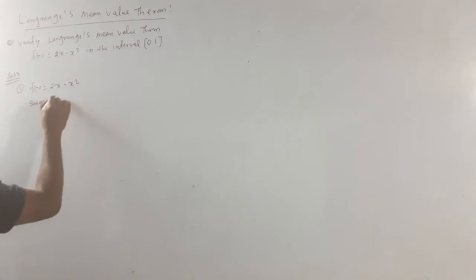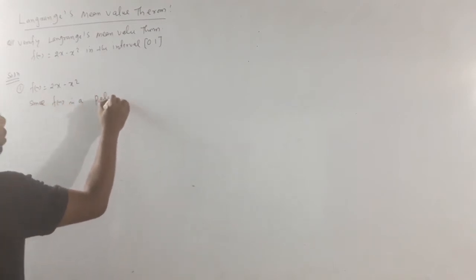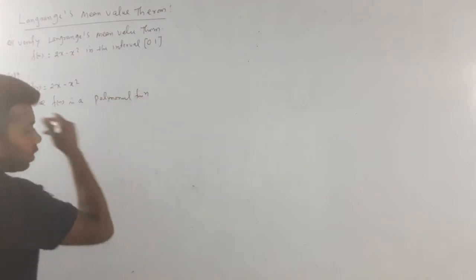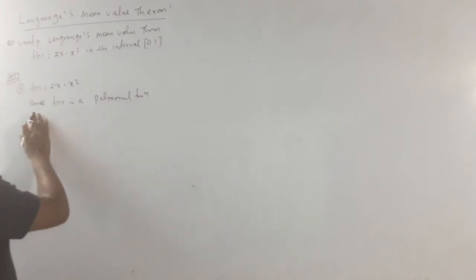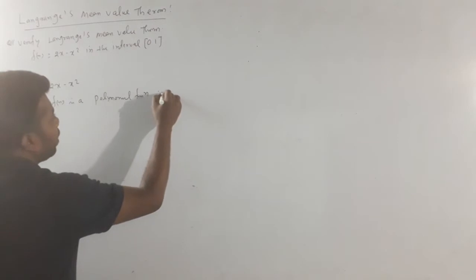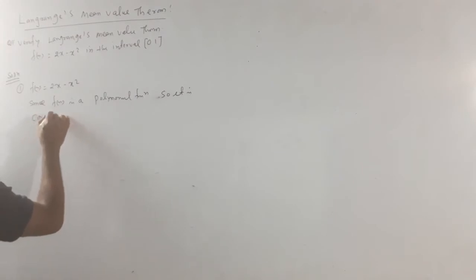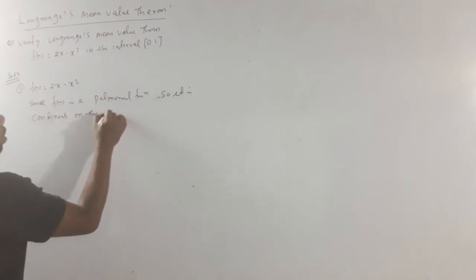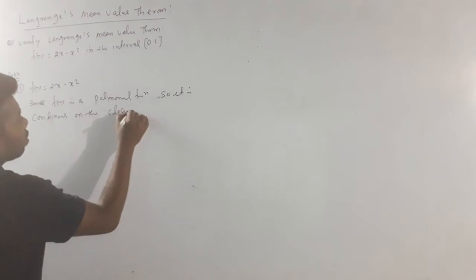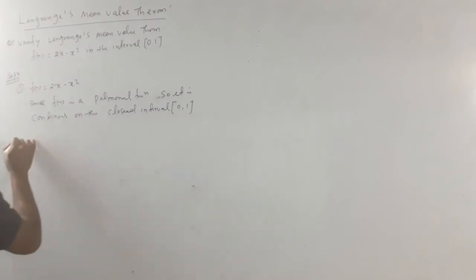Since f of x is a polynomial function, polynomial functions are generally continuous and differentiable. Since f of x is a polynomial function, it is continuous on the closed interval 0, 1. So, continuity check is done.